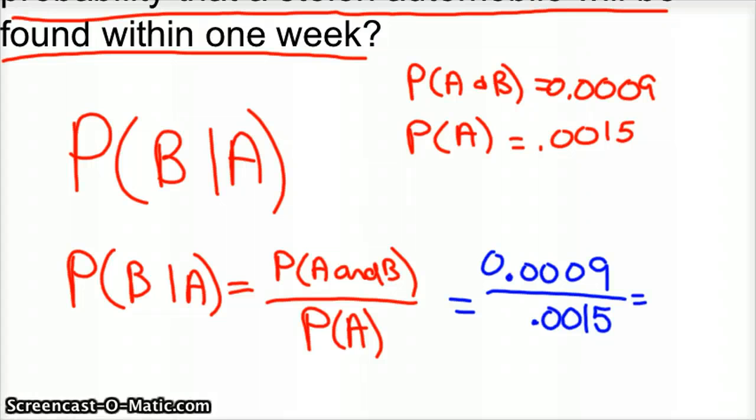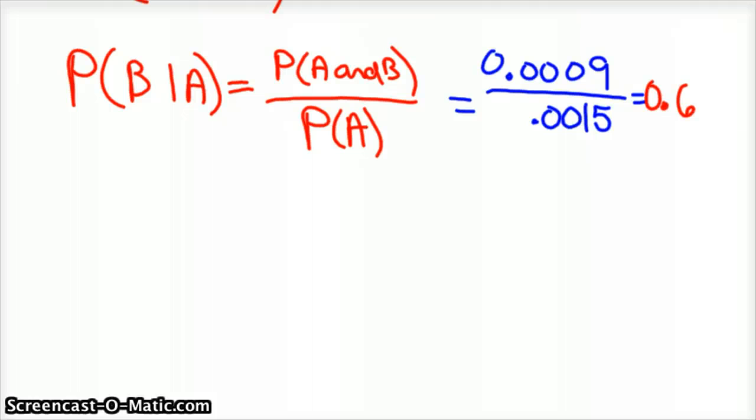So now we just want to know what's the probability of us getting that car back in a week. And if you divide those two out, you'll get 0.6. So now that since our car's been stolen,